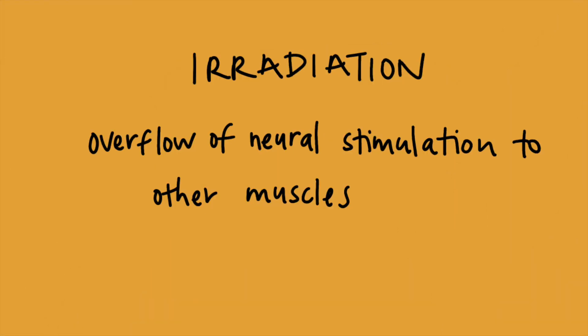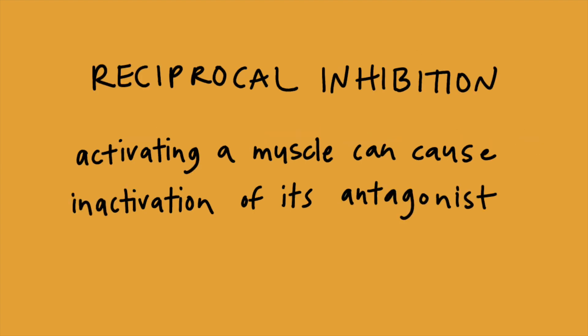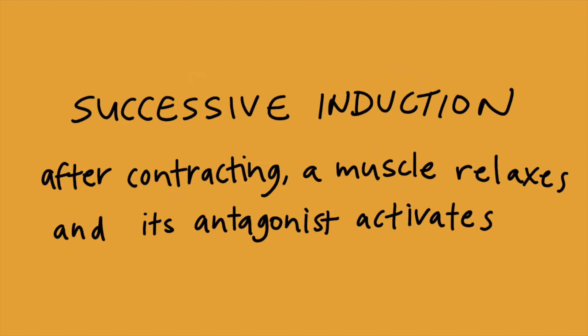Just as a sidebar, I want to go over three responses that your body has that you can use to help make your exercises more effective and decide when and where to provide resistance. Irradiation, also known as overflow, is contraction of other areas — even if the exercise is working on one muscle, other areas may contract as well and can get indirectly stronger. Reciprocal inhibition: when you activate a muscle, this automatically deactivates the antagonist. Successive induction: after max contraction comes max relaxation, but also the antagonist will then be activated. Depending on whether your goal is to stretch, strengthen, or improve activation of a certain muscle, you can use these principles to help you out.